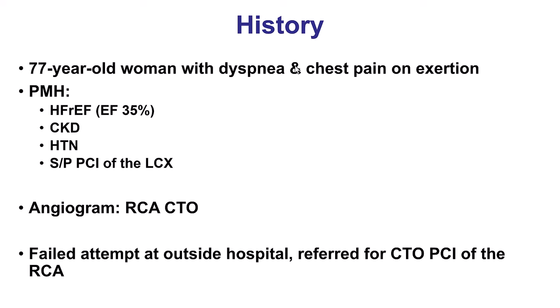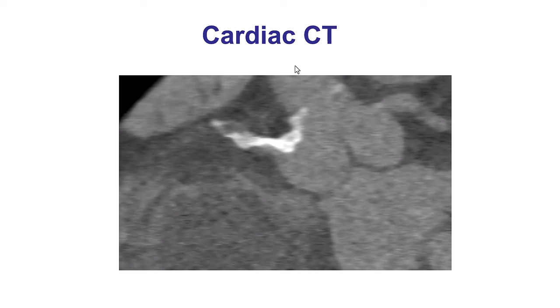There was an attempt for re-canalization that was unsuccessful at an outside hospital, even though there was successful crossing of a septal and retrograde advancement of a wire all the way to the proximal RCA. This is the cardiac CT that shows heavy calcification in the origin of the right coronary artery, which explains in large part the difficulties with re-canalizing this CTO.